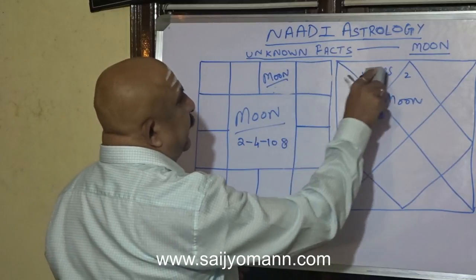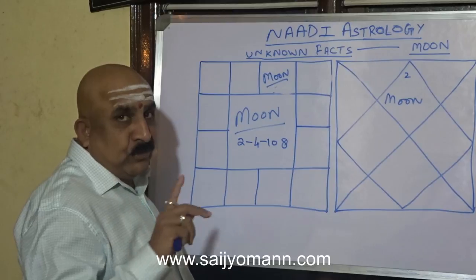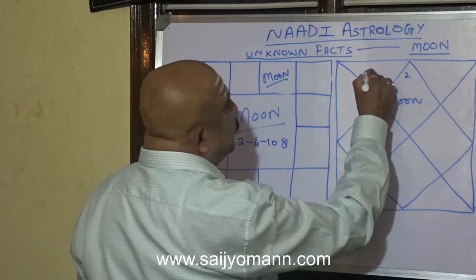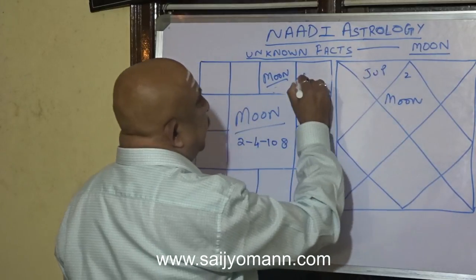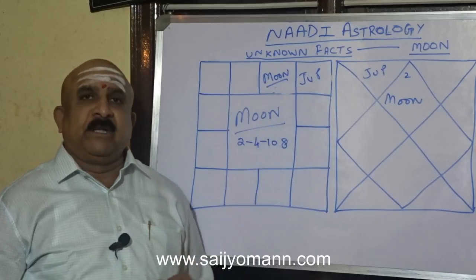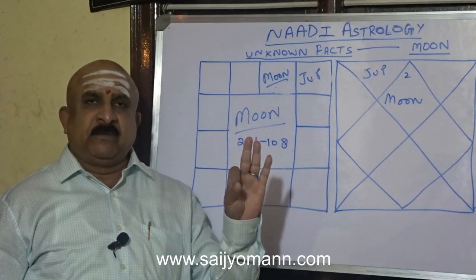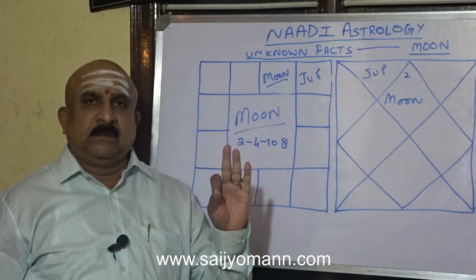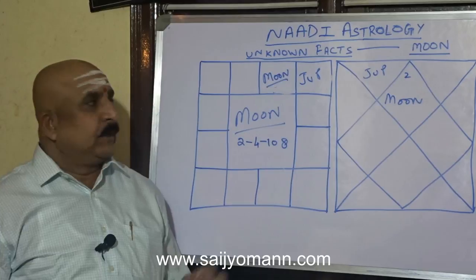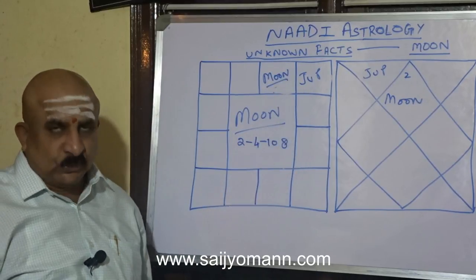When Jupiter comes and sits in the 2nd house from Moon — not Moon from Jupiter, but from Moon — Jupiter in the 2nd house means definitely the mother will be a teacher, professor, teaching type of job, HR trainer, something like that. This is what we can know about the 2nd house from Moon.